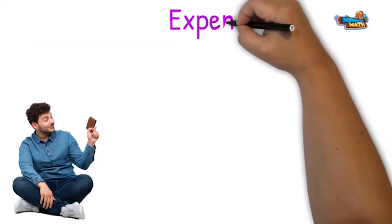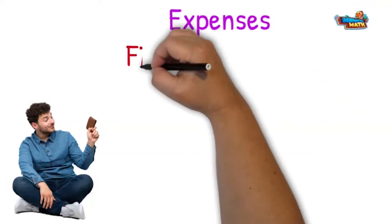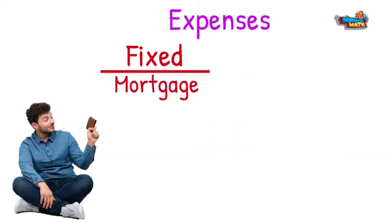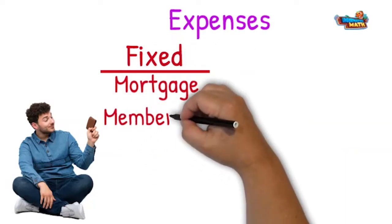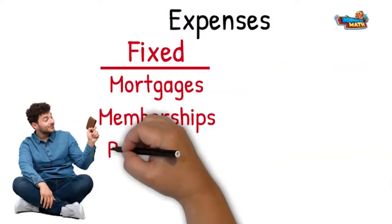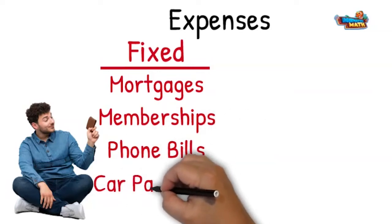There are two types of expenses: fixed expenses and variable expenses. Fixed expenses are expenses that do not change from time period to time period. Fixed expenses include mortgages, memberships like my gym membership, phone bills, and car payments.